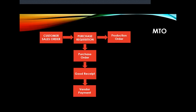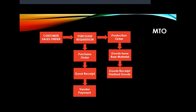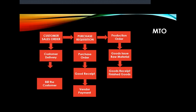On the production side, they create a production order. After the production order, they do goods issue — raw materials are issued which were bought via the purchase order and goods receipt. The raw material purchased is sent into the production line and finally made into finished goods. After finished goods are entered into the system, they are delivered to the customer and the customer is billed.